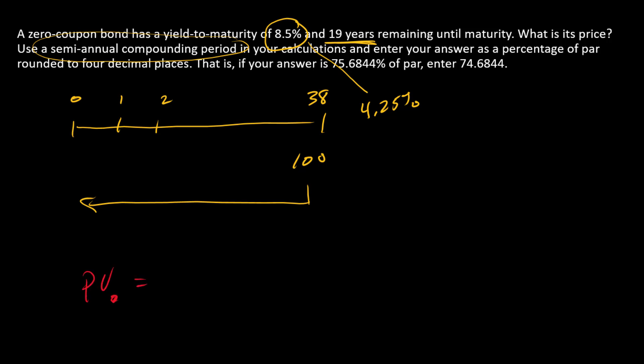We can just say PV at time zero is equal to $100 divided by one plus the discount rate raised to the 38th power.